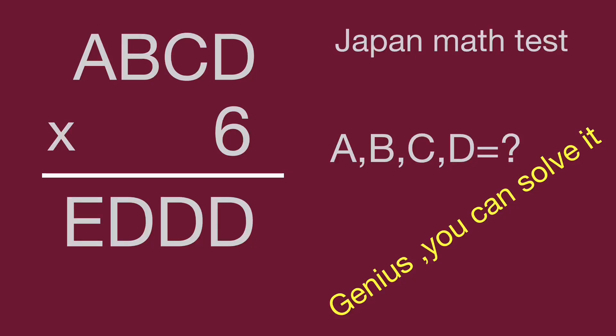Hello, you are watching Barohibo Math Genius Readers. We have a four-digit number A, B, C, D. They multiply by 6 to equal a new four-digit number E, D, D, D. It's an interesting math question from Japan Math Test.